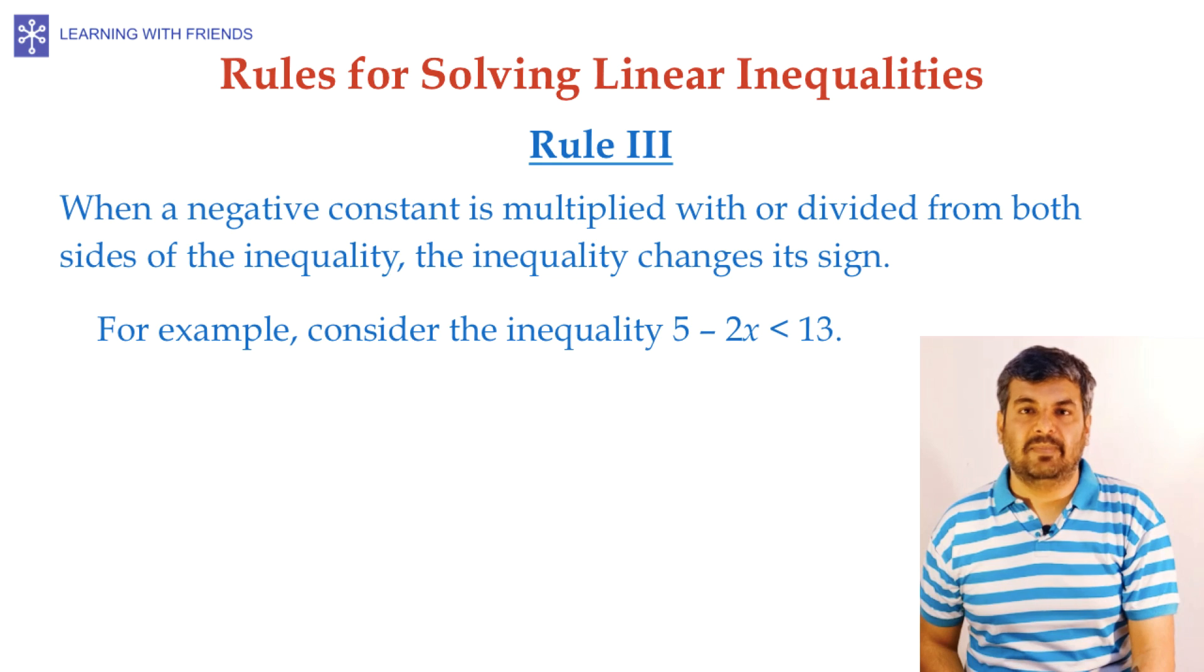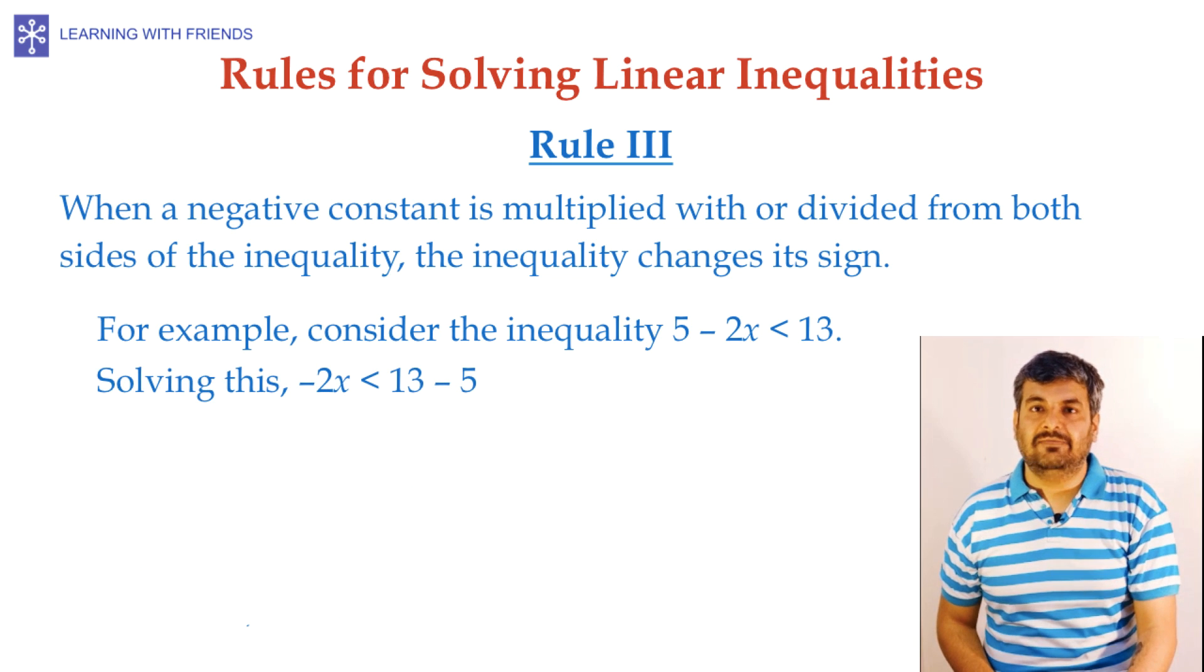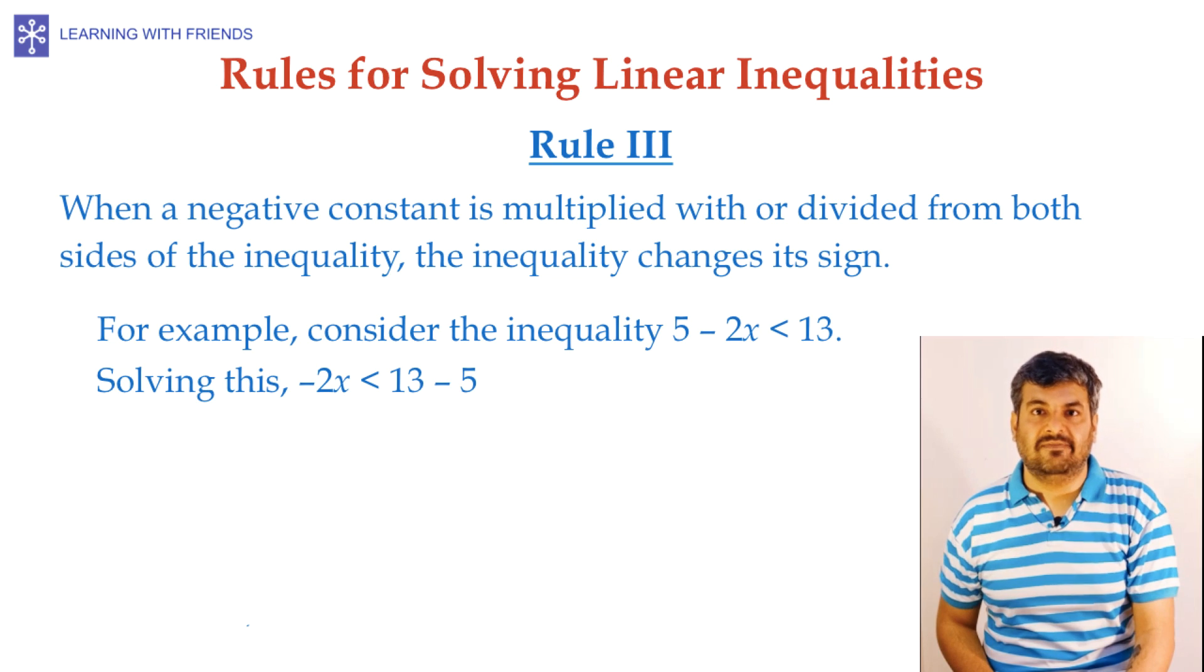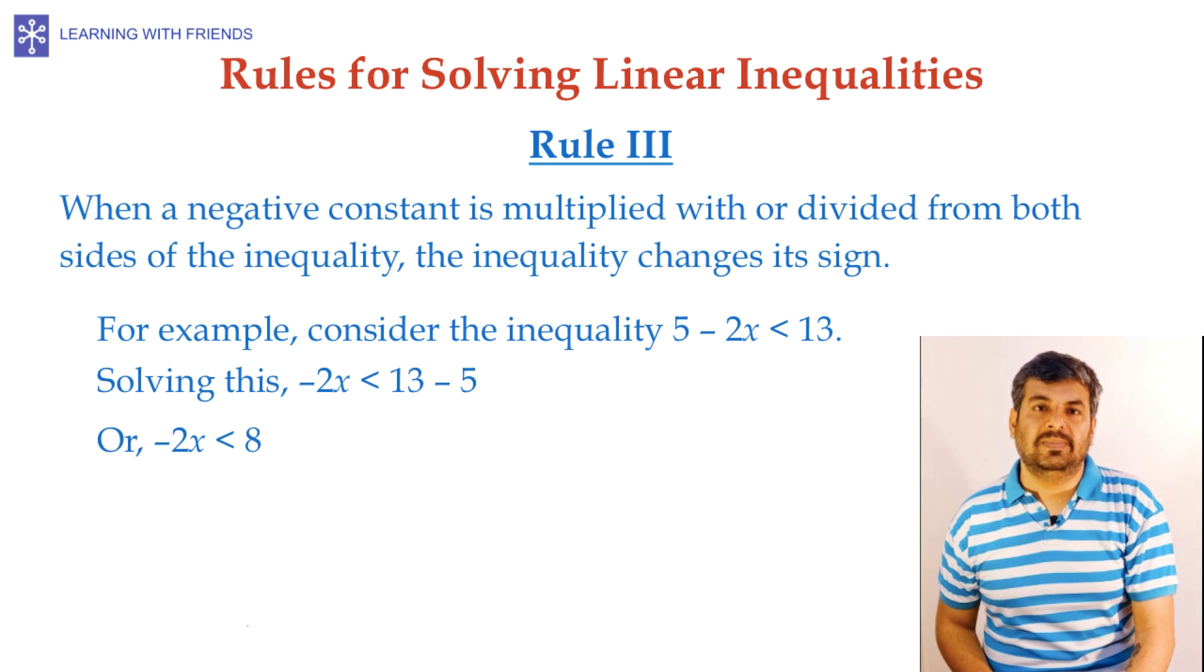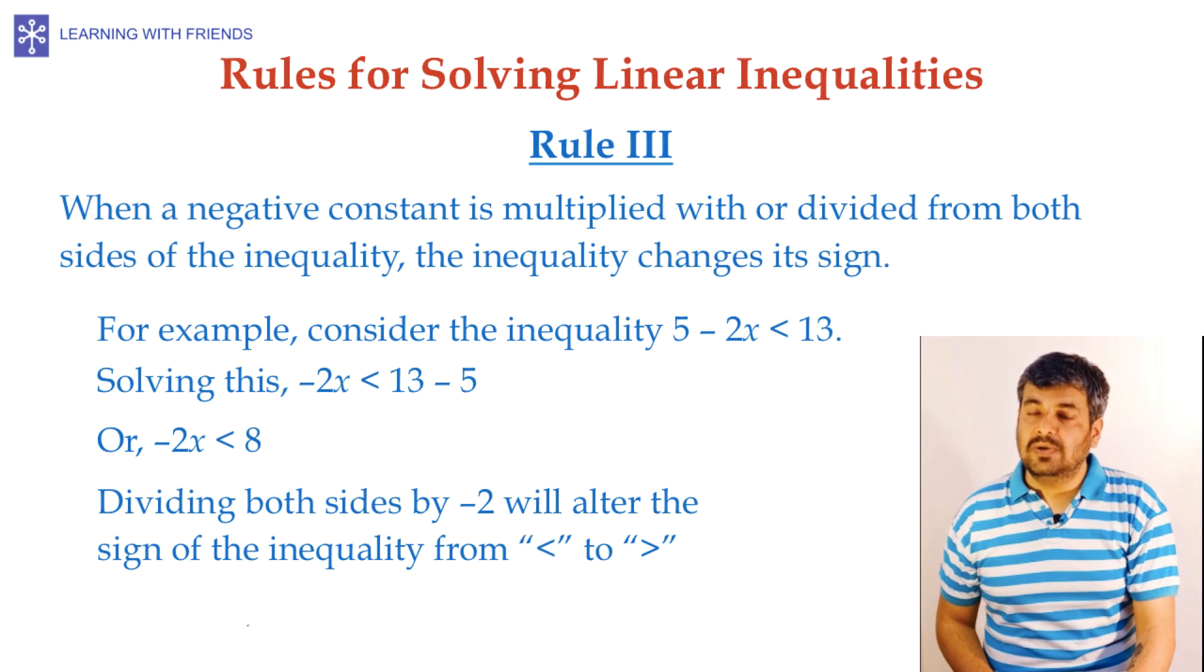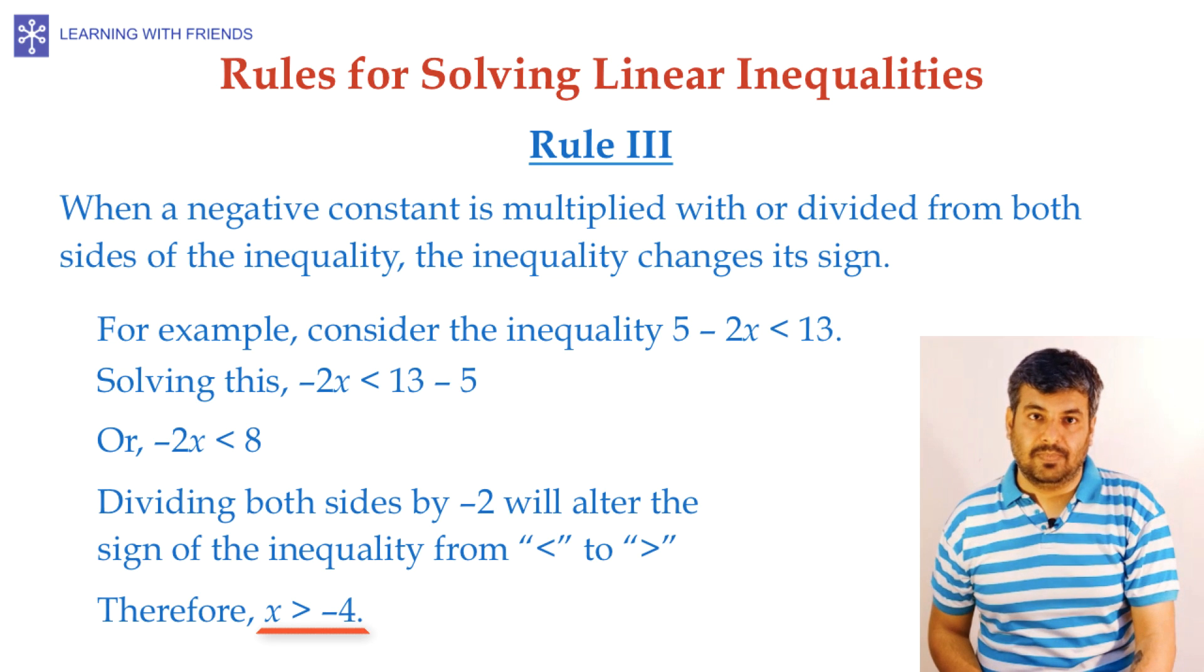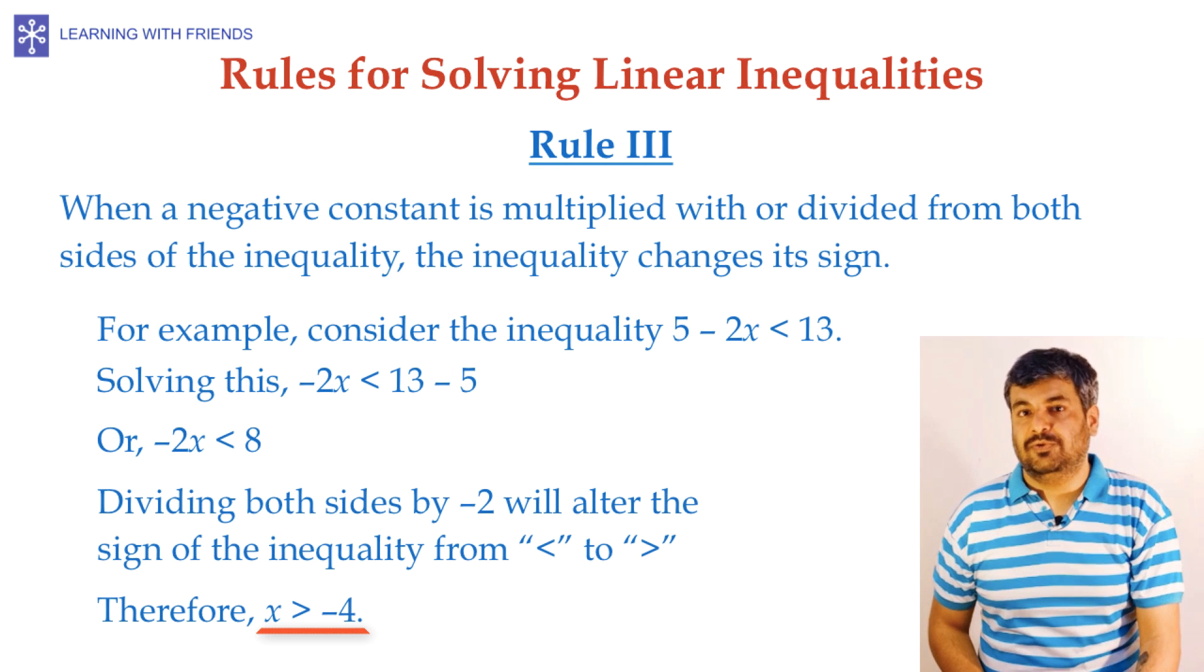Consider the inequality 5-2x is less than 13. To solve this and isolate x, we first subtract 5 from both sides of the inequality. So that on the left-hand side we have minus 2x and on the right-hand side we have 13-5 which is 8. So that our inequality becomes minus 2x is less than 8. To isolate x further, we would have to divide both sides of the inequality by minus 2. So that on the left-hand side we are left with x and on the right-hand side we are left with minus 4. But remember, because we are dividing by a negative quantity, the inequality will change its sign from less than to greater than. So that the inequality will now be x greater than minus 4. Since we want to solve for x, that is also the solution for the inequality.